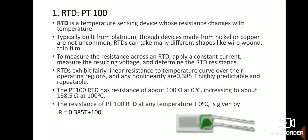To calculate the resistance of PT100 at any temperature T degrees Celsius, the equation is: R = 0.385 × T + 100. If T = 0°C, resistance = 100 ohms. If T = 100°C, then 100 × 0.385 = 38.5, plus 100 = 138.5 ohms. So at any temperature T we can calculate the resistance of PT100.